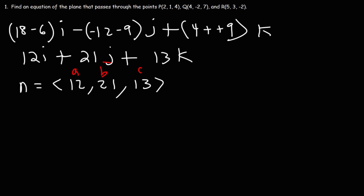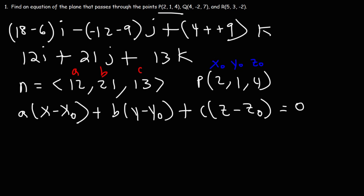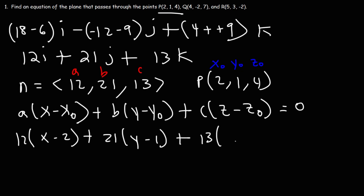A, B, and C are different from the vectors A and B. We need two things to define a plane: the normal vector, which we now have, and a point. The point we'll use is P at (2, 1, 4), giving us x₀, y₀, and z₀. The formula for the equation of the plane is: A(x − x₀) + B(y − y₀) + C(z − z₀) = 0. Plugging in: A is 12, x₀ is 2; B is 21, y₀ is 1; C is 13, z₀ is 4.